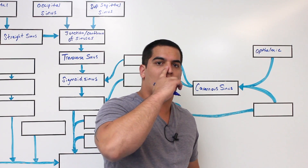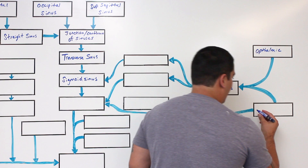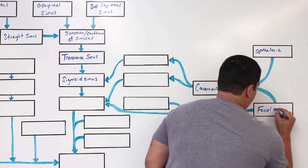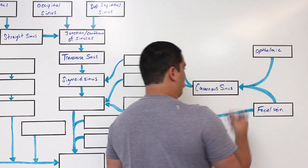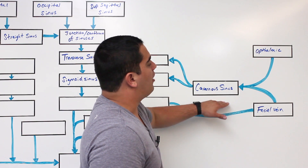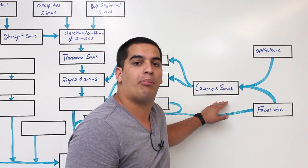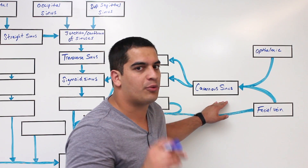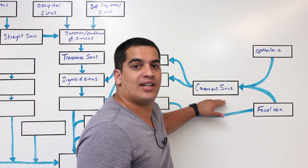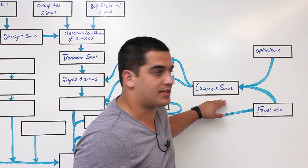There's also the facial vein, draining some of the blood from near the nose and lips, which can also empty branches into the cavernous sinus. Additionally, the cavernous sinus receives a major contribution from what's called the sphenoparietal sinus — another really important contributor.